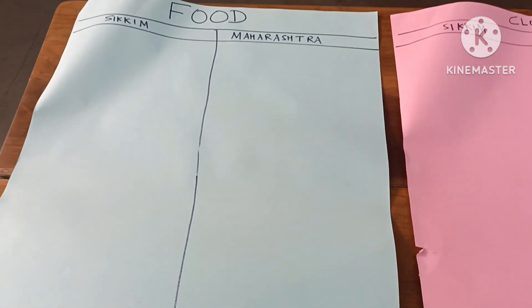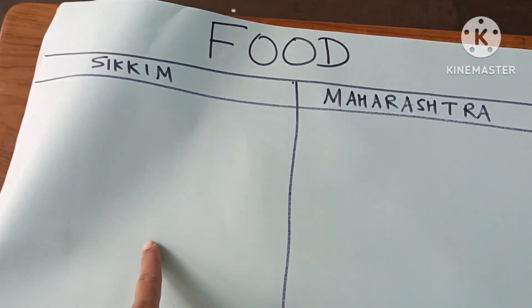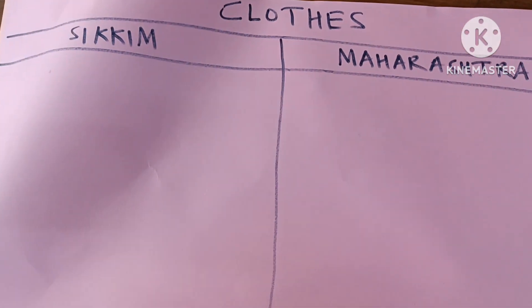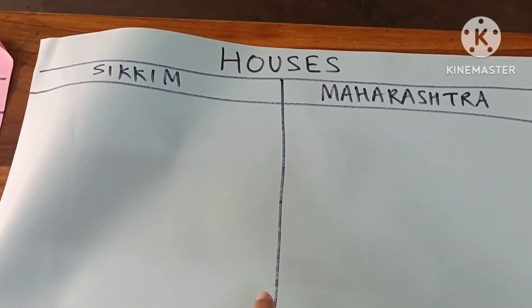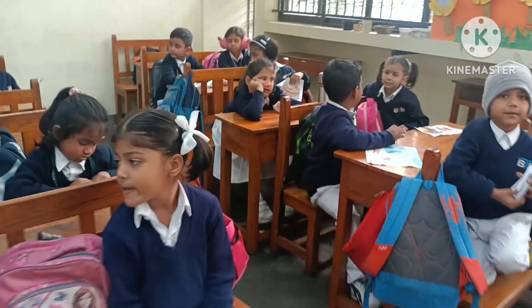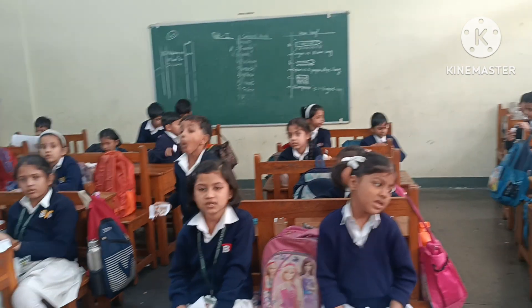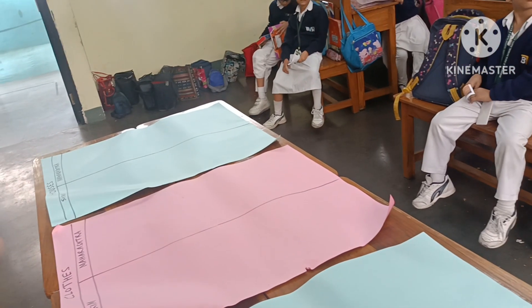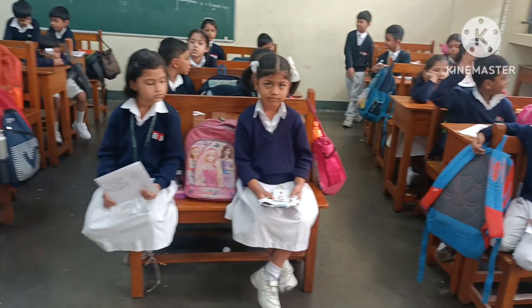Very good! So here I have kept three charts: one for food, where we will paste the food of Sikkim and Maharashtra; one for clothes, where we will place clothes of Sikkim and Maharashtra; and one for houses of Sikkim and Maharashtra. You have to bring the pictures. Have you all brought pictures? Yes! So picture cutouts we have to paste accordingly — food, clothes, houses. Let's start!